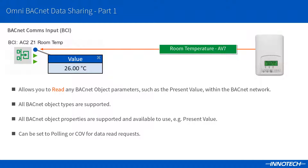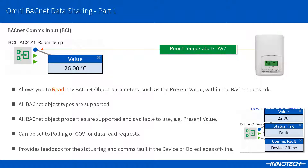The read request can be set to either polling, which asks for the value at specific time intervals in seconds, or change of value referred to as COV, which can offer a more efficient method of value update and can reduce network traffic. The block also provides feedback in relation to the status flags and comms fault if the device or object being read goes into fault or is offline. In this example, the default value configured in the block's properties is shown as the device has gone offline.